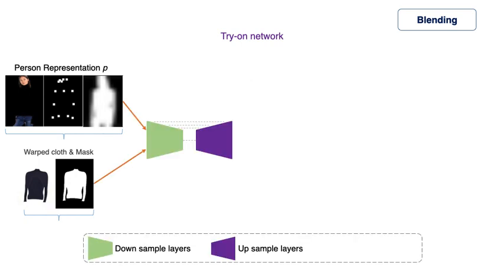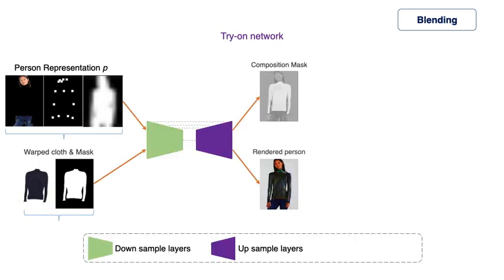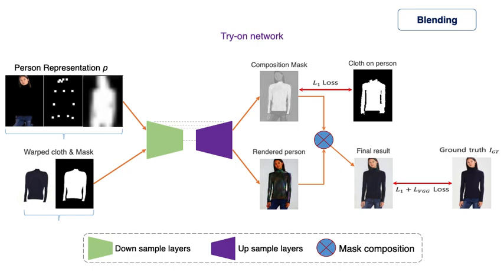We use a pre-trained blending network for synthesizing the final try-on result, similar to the try-on module of CP-Viton Plus. We input the warped cloth from the previous step to the blending network along with the target human representation to generate the final output.